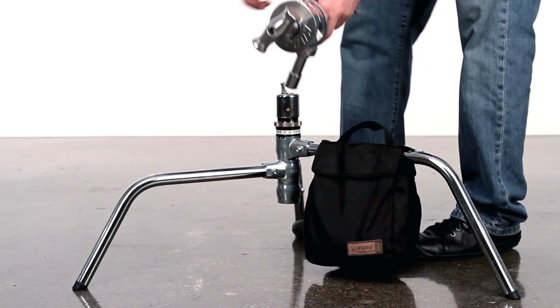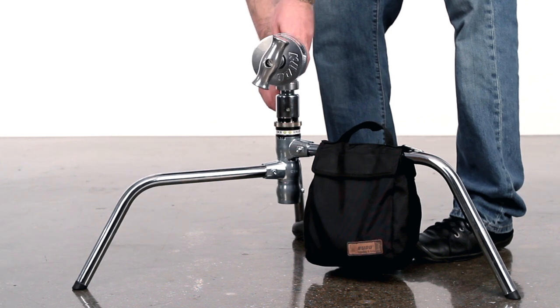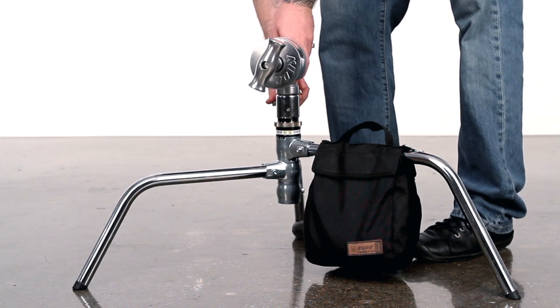The junior mounting pin allows this head to be mounted into any junior receiver, such as a turtle base from a C-stand.